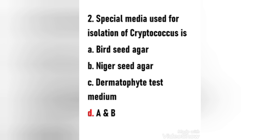Second question: Special media used for isolation of Cryptococcus — Bird seed agar, niger seed agar, dermatophyte test medium, or A and B? The right answer is option D, both A and B. Bird seed agar, also known as staib medium, is a selective and differential medium for isolation of Cryptococcus neoformans from clinical specimens. It is also known as caffeic acid agar or niger seed agar. Due to the presence of phenol oxidase enzyme, Cryptococcus species produce dark brown melanin-like pigments and are thus presumptively identified.